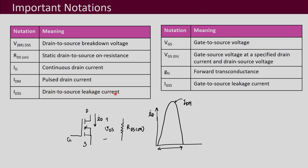Then drain-to-source leakage current: when this device turns off there will be some small leakage current flowing, although ideally we assume no current flows, but there may be a small leakage current. Then the maximum gate-to-source voltage that can be applied. Then the threshold voltage between gate and source — this is the minimum voltage required for the MOSFET to turn on, and that threshold voltage will be specified. Then your forward transconductance G_FS — we had seen these characteristics before — and that slope G_FS will also be given.